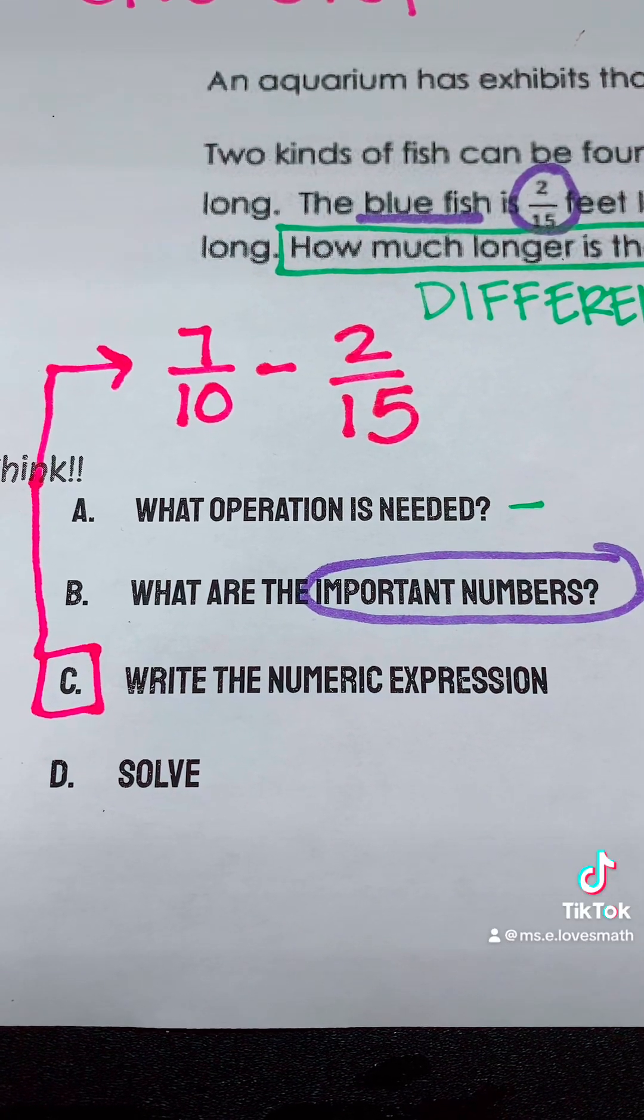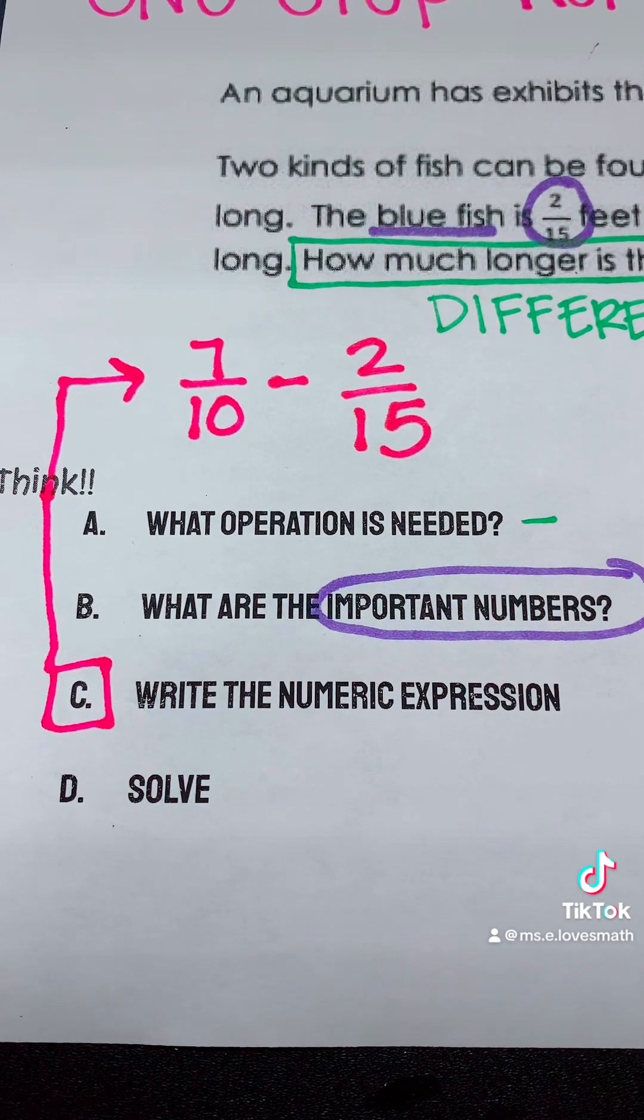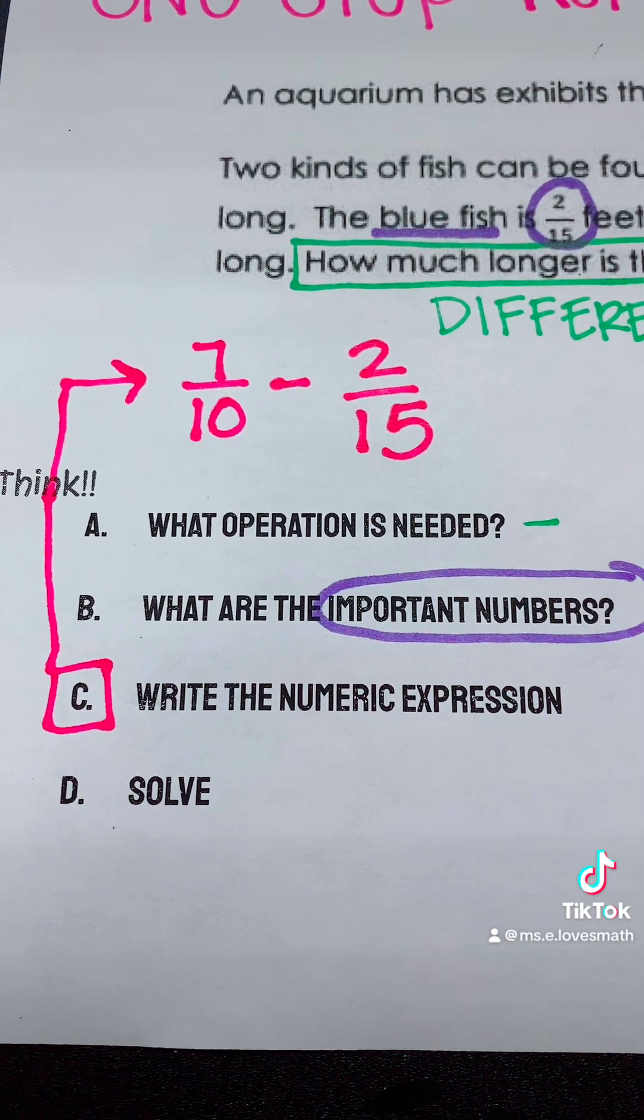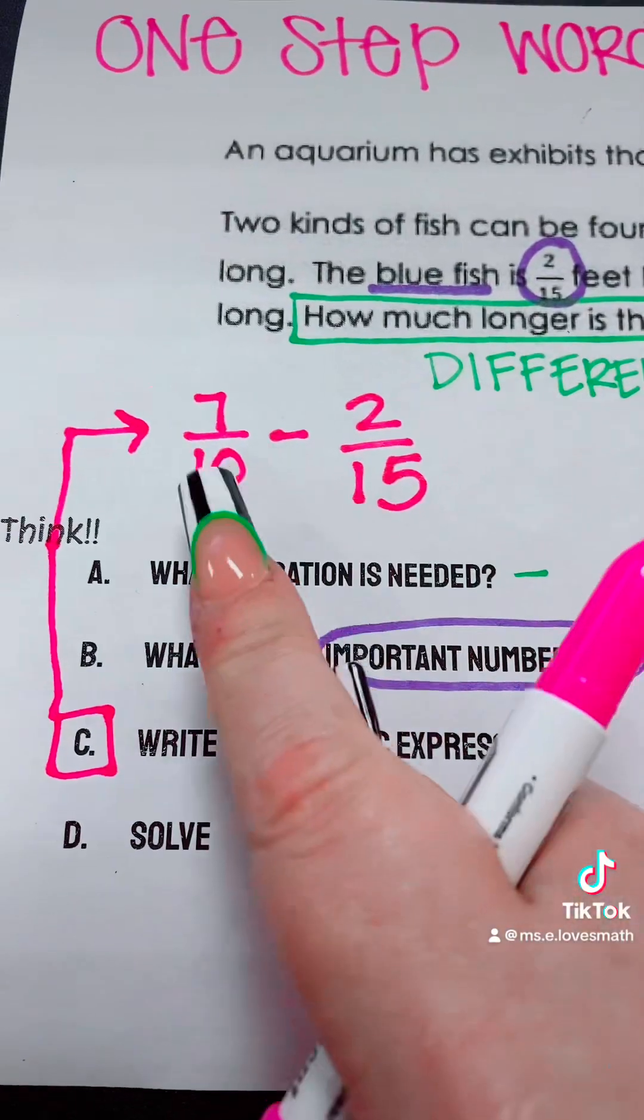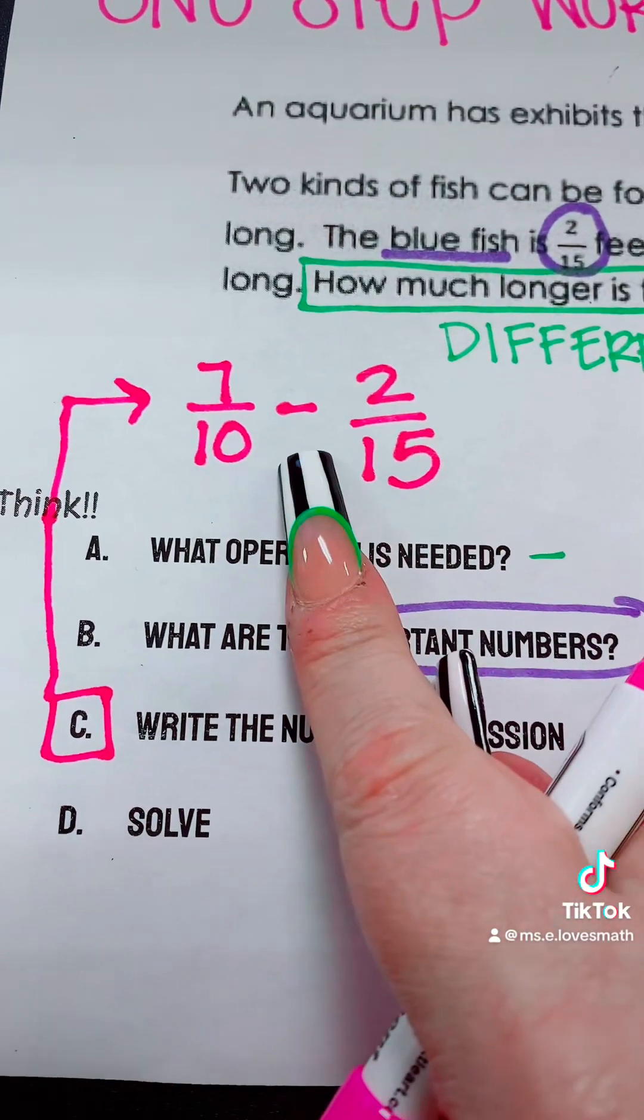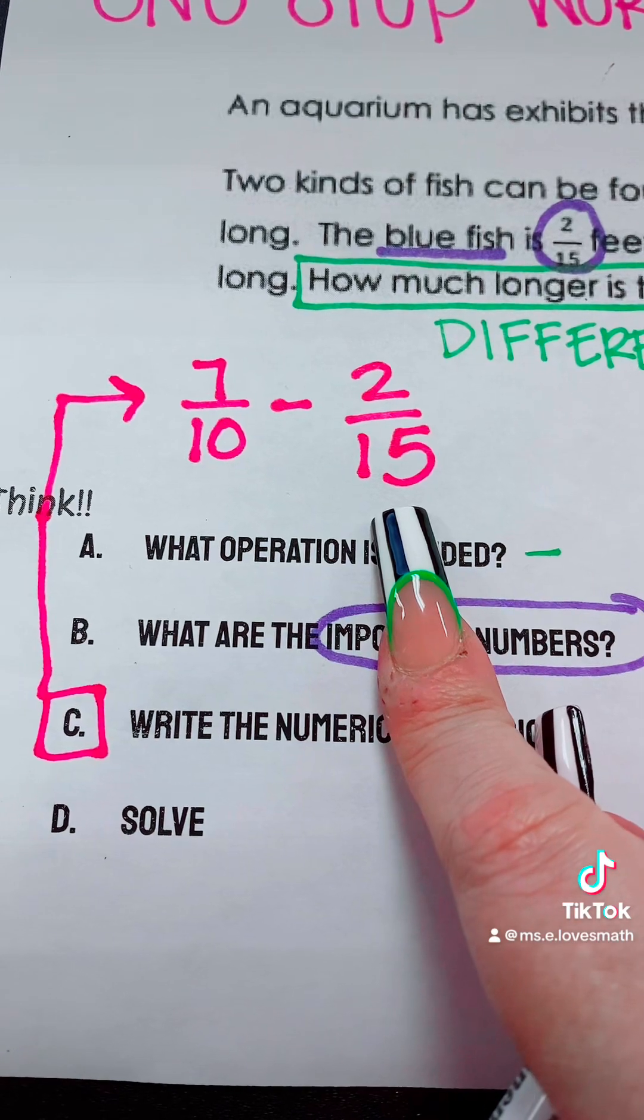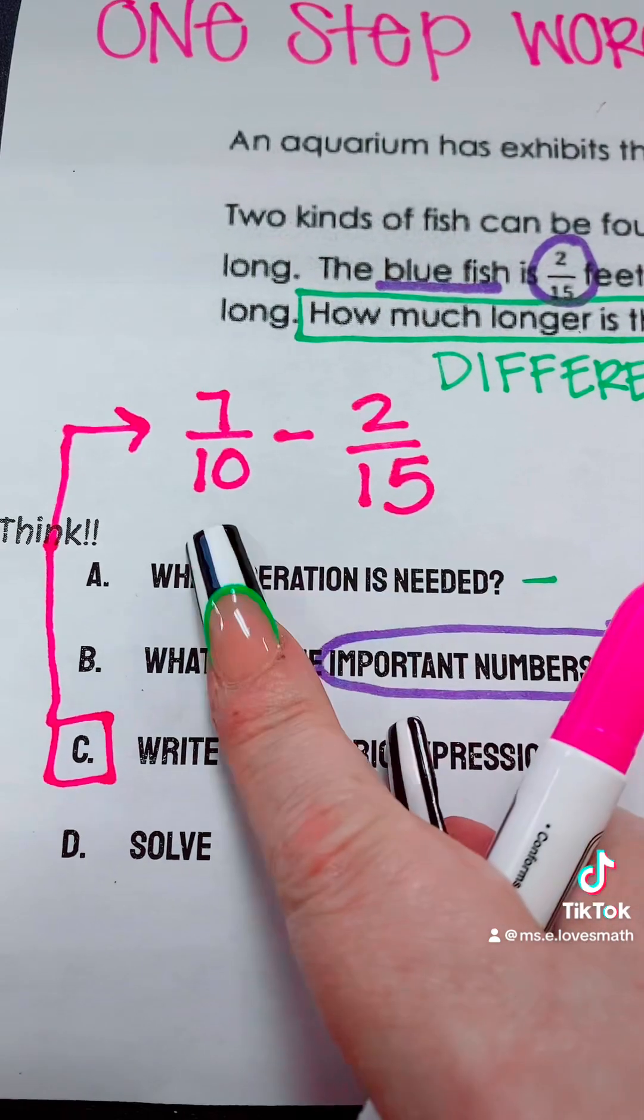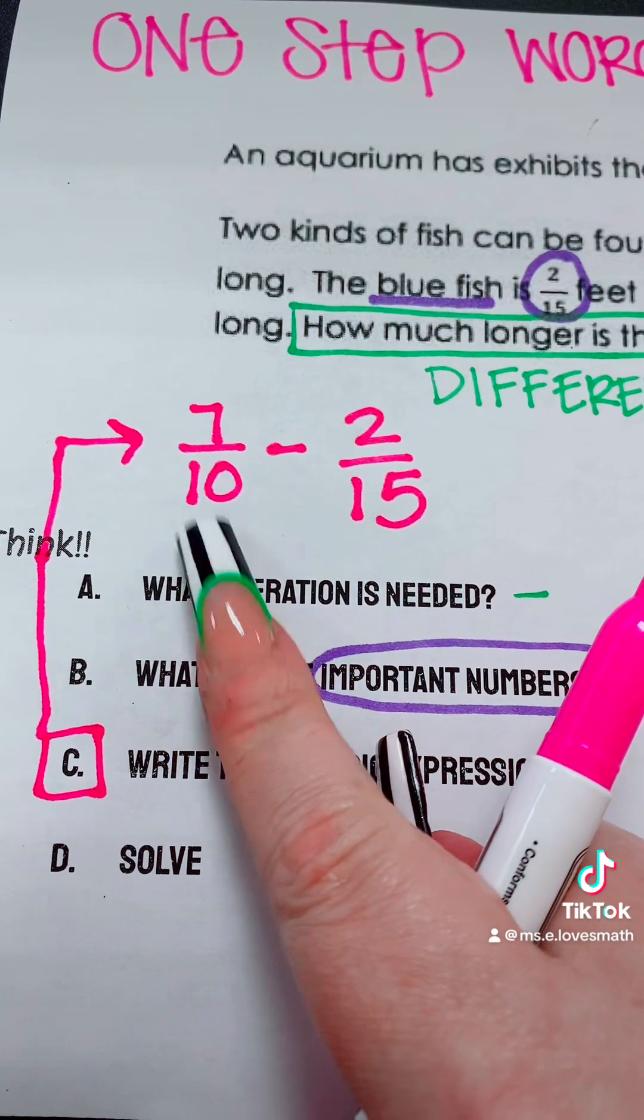So now we're ready to write the numeric expression. We can write the numeric expression 7/10 minus 2/15 to represent the orange fish subtracting out the smaller fish, the blue fish, to figure out the difference in size, or how much longer the orange fish is.